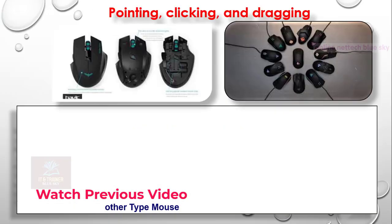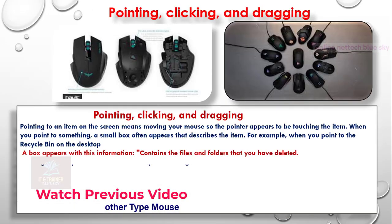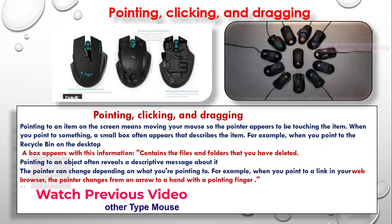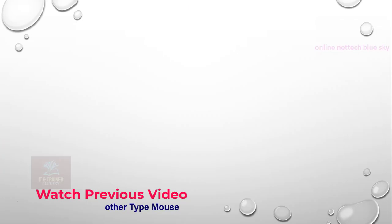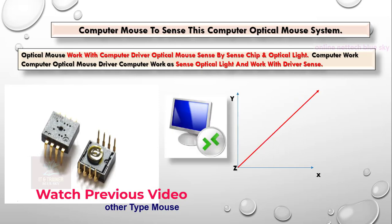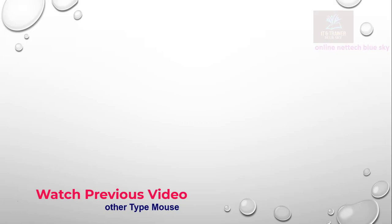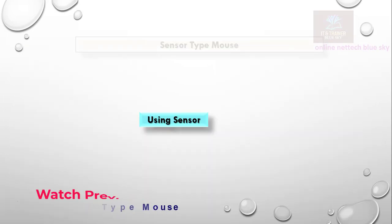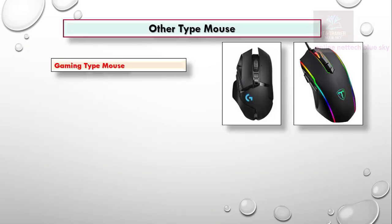Tapable tap mouse — pointing, clicking, new systems coming, and dragging. The computer optical technology sends and observes the technology. Touchpad type mouse, working sensor type mouse, working — other types of mouse.